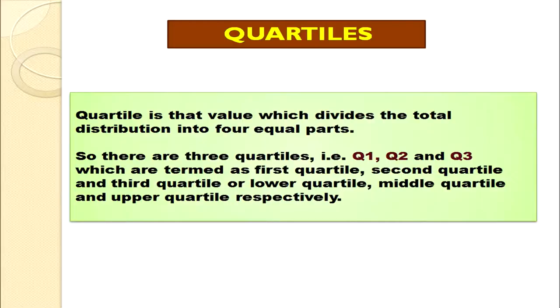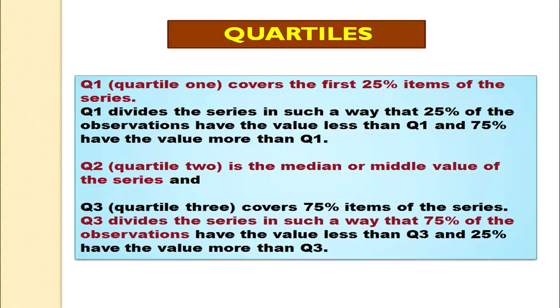Now, what is a quartile? A quartile is that value which divides the total distribution into 4 equal parts. So there are 3 quartiles — Q1, Q2 and Q3 — which are termed as 1st quartile, 2nd quartile and 3rd quartile, often known as lower quartile, middle quartile and upper quartile respectively.